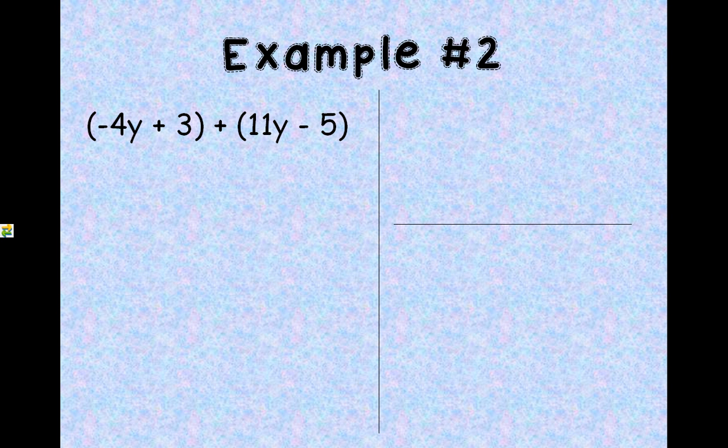Okay, example number 2. You have a negative 4y plus 3 plus 11y minus 5. We're going to do the same thing. Use the vertical method. Align our like terms vertically and add.